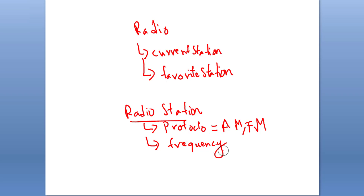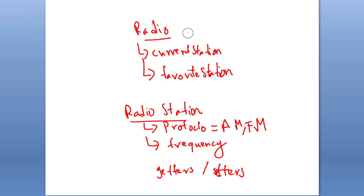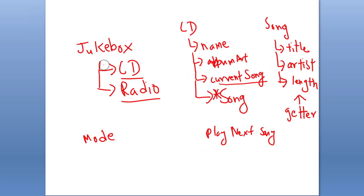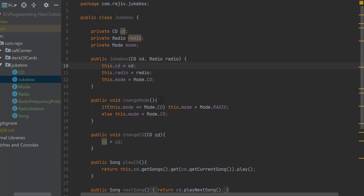Since the protocol and frequency of a radio station can change dynamically as the user is using it, we need to make getters and setters for both fields. The radio class should also have getters for its fields and setters for the current station and favorite stations, since we might need to add or remove them.